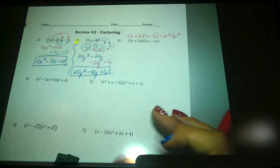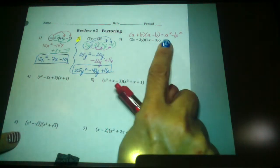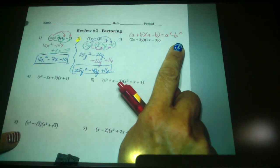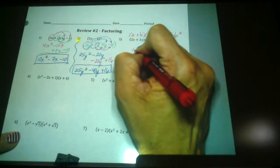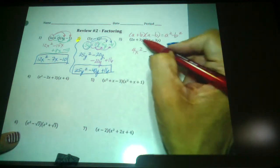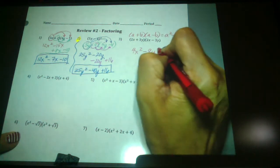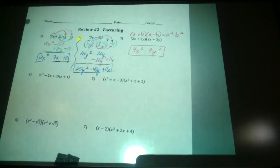So I would start to recognize that difference of two squares pattern — all you have to do is take the first term squared and subtract the second term squared. The first term squared is 4x squared, minus the second term squared, 9y squared. So there's your difference of two squares.